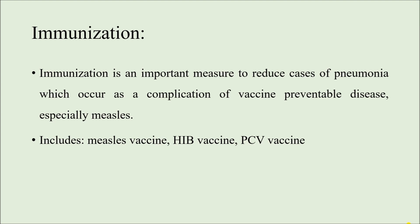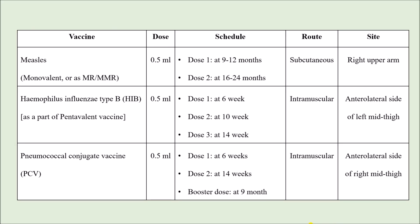The first vaccine is the measles vaccine, which can be monovalent — meaning only the measles component — or it can be an MR vaccine (Measles-Rubella) or MMR vaccine (Mumps-Measles-Rubella). The dose is 0.5 ml. There are two doses: the first at 9 to 12 months and the second between 16 to 24 months, preferably around 18 months. The route of administration is subcutaneous and the site is the right upper arm.